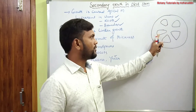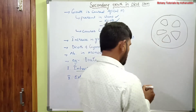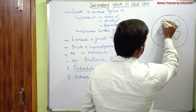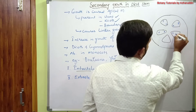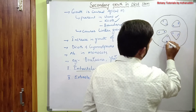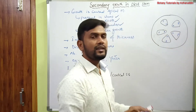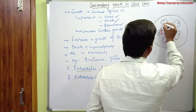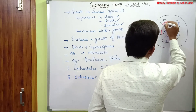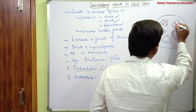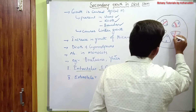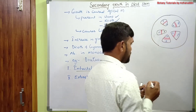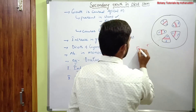In the vascular bundle, xylem and phloem are present. In between the xylem and phloem, there is cambium. Cambium is present between xylem and phloem. This cambium is called fascicular cambium — the cambium which is present between xylem and phloem is called fascicular cambium.